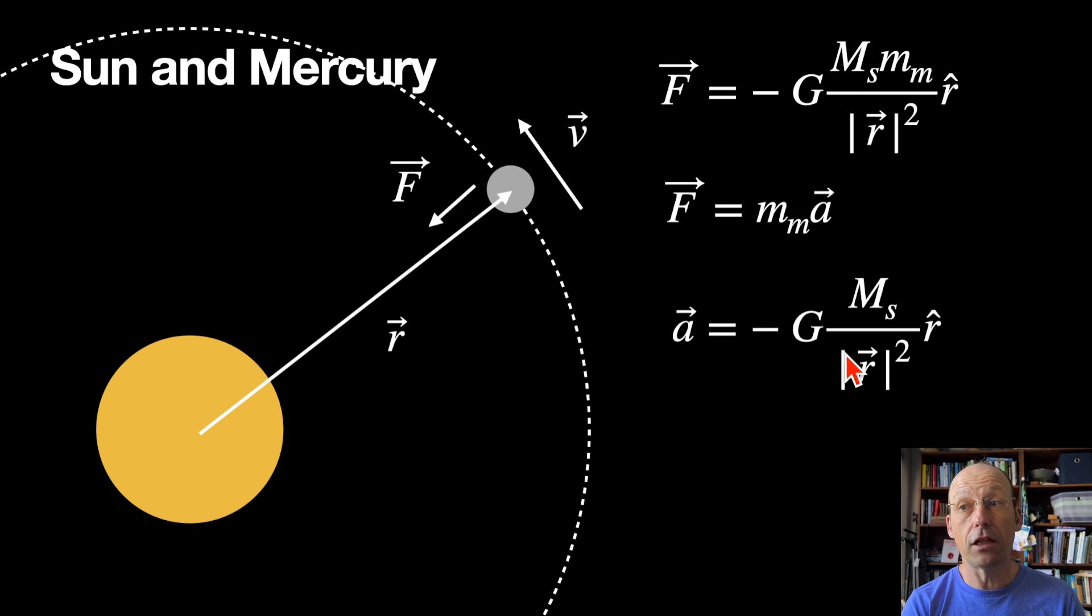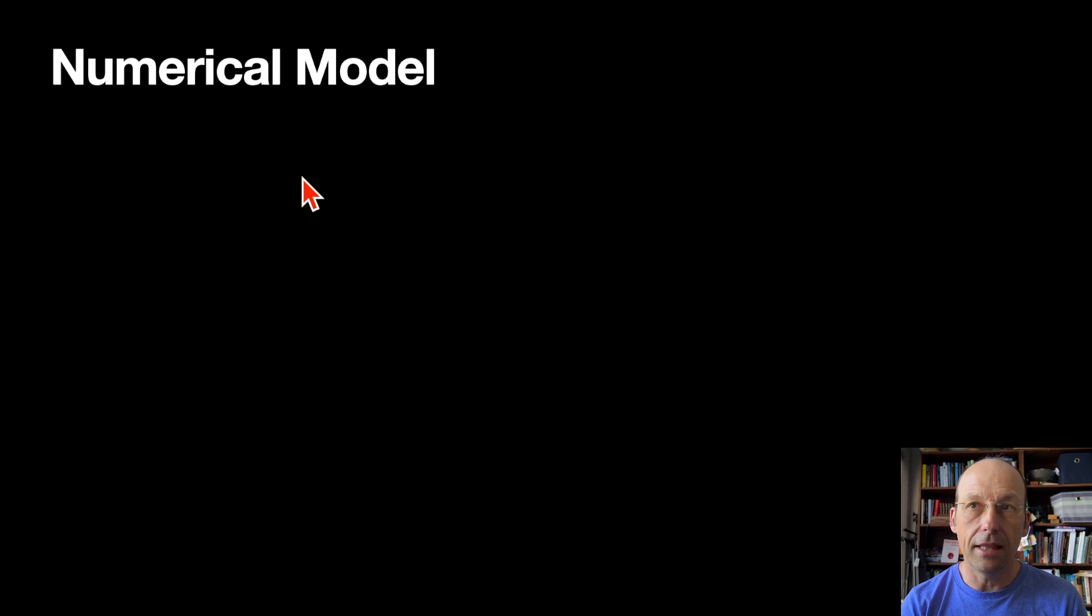But now I have the acceleration, and it only depends on the mass of the sun and the distance from Mercury to the planet. Now, we do have a problem, though, because the acceleration is a vector, velocity is a vector, force is a vector, r is a vector, and this thing is going to move. So everything is going to change. How do we deal with that in this case? And the answer is to build a numerical model. Of course, you probably already knew that if you paid attention to anything I've done ever. And I'm not going to go over this in super detail. I'm going to focus more on the Python.